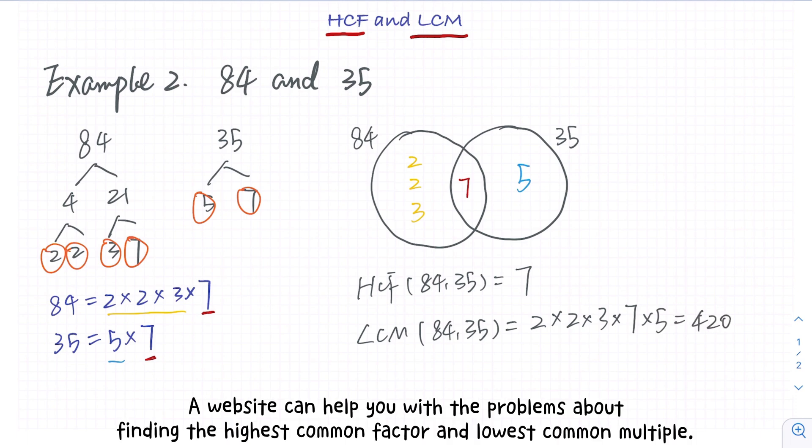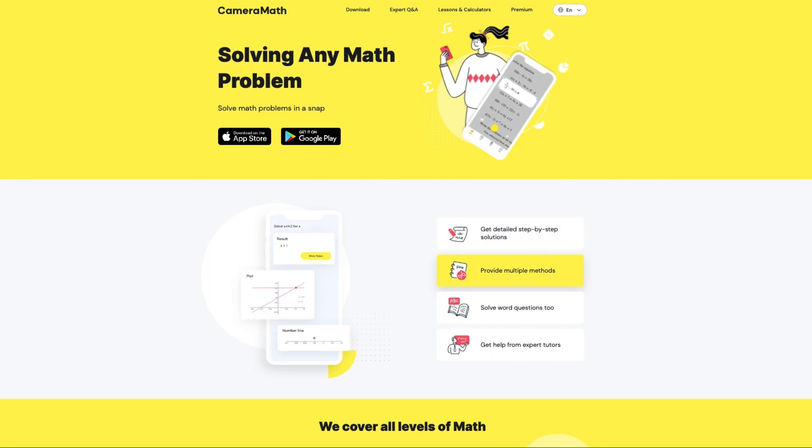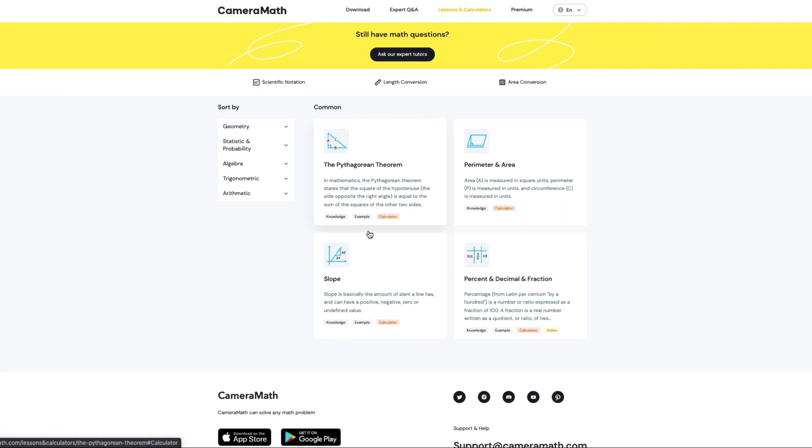A website can help you with the problems about finding the highest common factor and lowest common multiple. That is Camera Math, an amazing website for students to learn math lessons and calculate quicker and smarter.